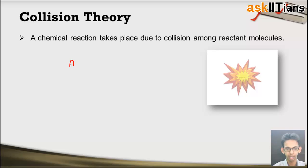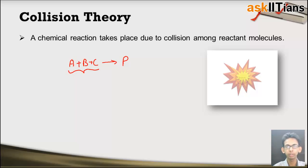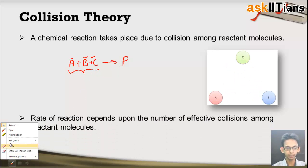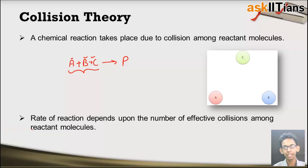Let's say if in a reaction A, B and C — three reactants — are reacting to form product P. In this case, the molecules of these three reactants are colliding with each other and because of this collision the product is being formed. So obviously, if the reaction takes place due to collision between the molecules, the rate of reaction will also somehow depend on these collisions.